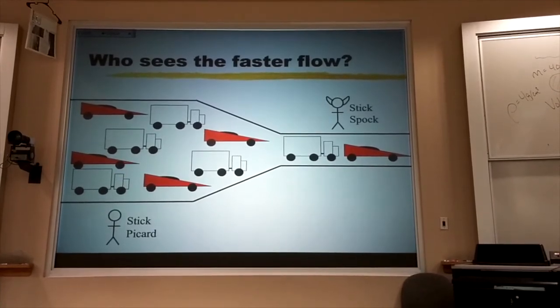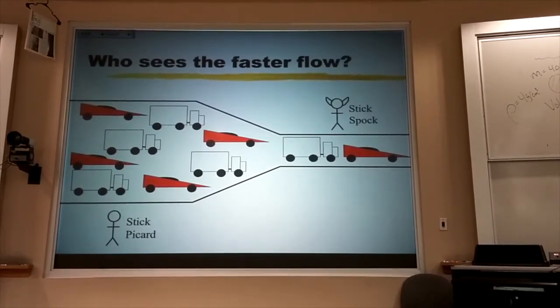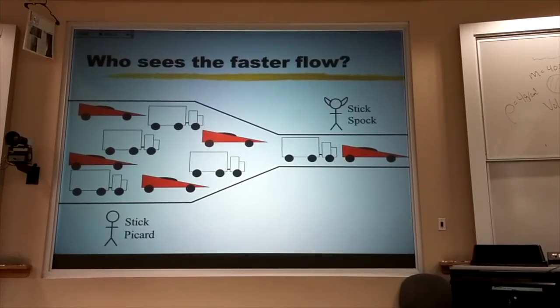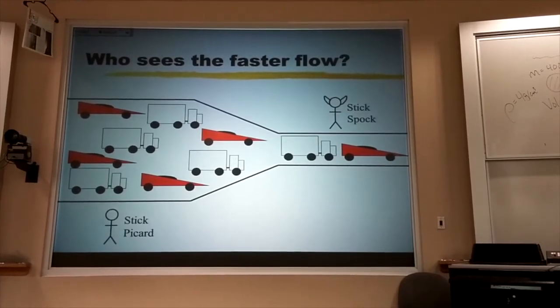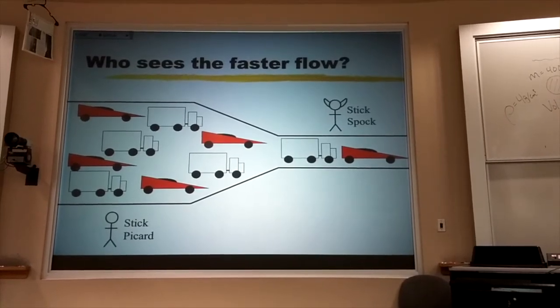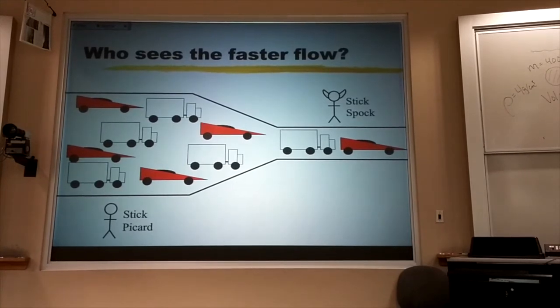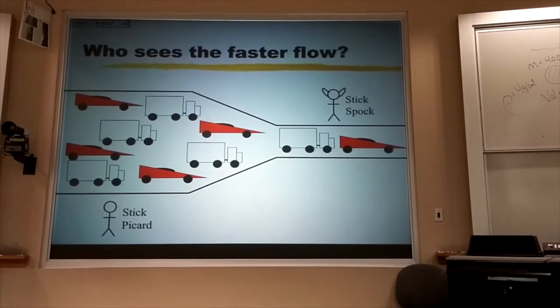How do the two numbers on their two counters compare? Who's got the bigger number? They've got to have the same number or else some of those cars were being beamed up to the Enterprise, right? Yeah, they've got to. Whatever went past Picard has to go past Spock.